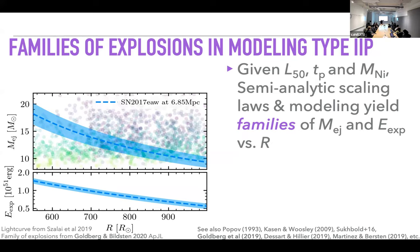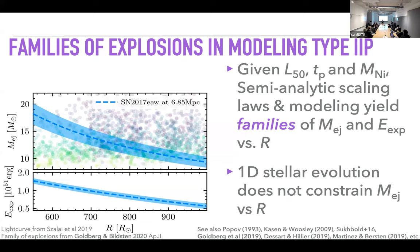This cloud of points represents a bunch of MESA models — 1D stellar evolution models assuming spherical stars — where I changed the stellar evolution input physics within reasonable values. You can cover the entire parameter space, meaning that 1D stellar evolution, even with reasonable uncertainties, does not constrain the ejecta mass versus radius relation. When you pick a grid of stellar evolution models that's narrow in this parameter space controlling light curves, you will find a solution consistent with the light curve — but there's no guarantee that's the right one.